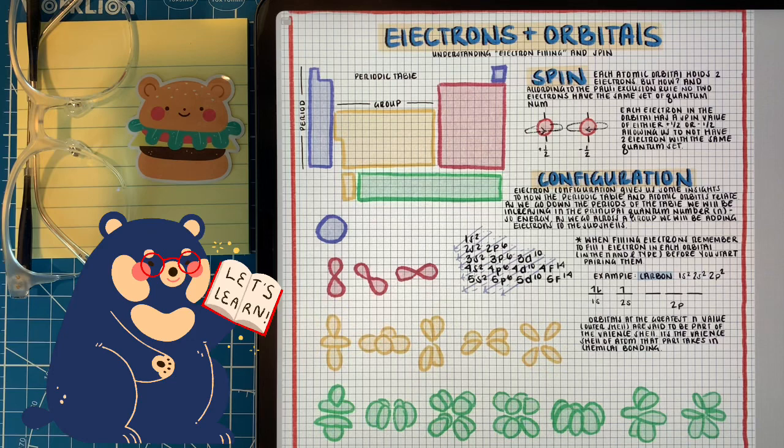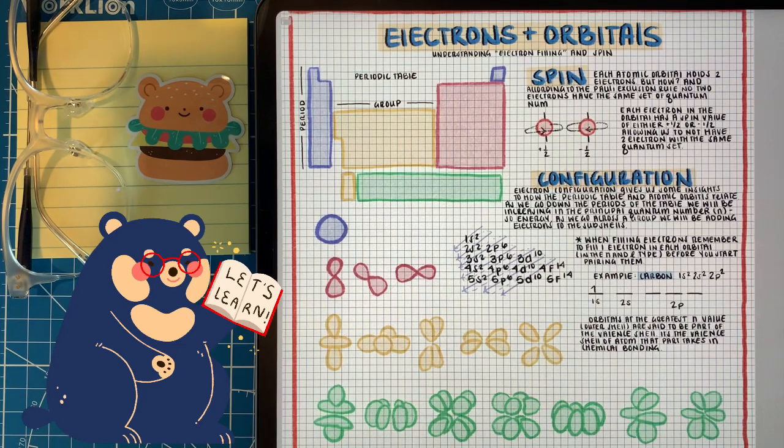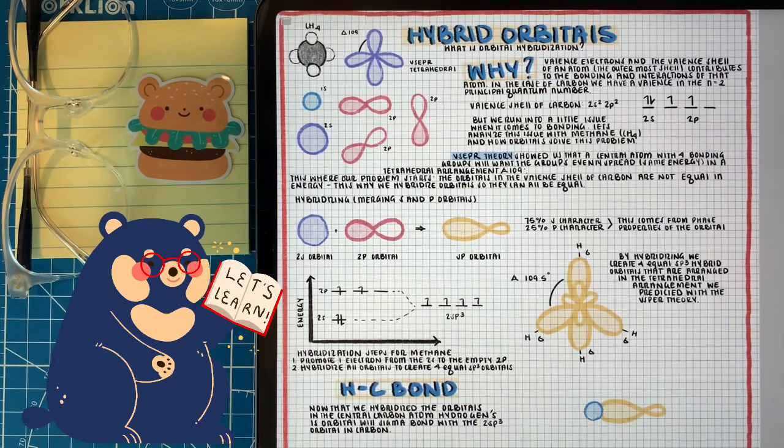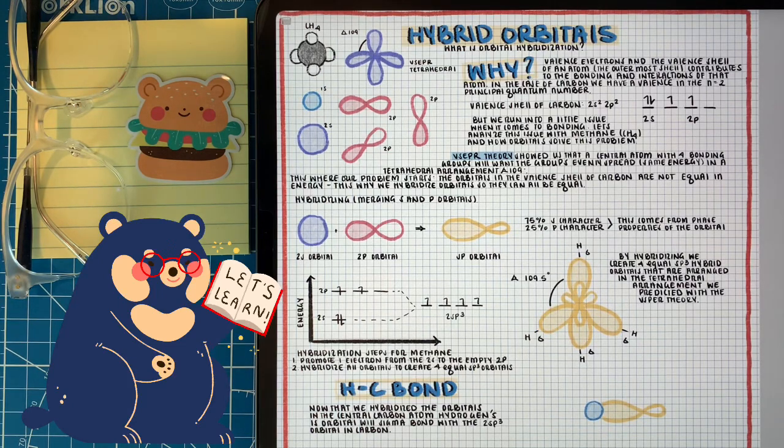Even though the VSEPR model is really helpful to help us understand how central atoms are going to rearrange bonding groups to lower the repulsive forces, atomic orbitals don't naturally have those shapes. And this is where we get into the topic of talking about hybridization. Even though methane wants that tetrahedral shape for the four hydrogens it's bonding with, each of those bonding orbitals have to be equal energy, equal length, and equal shape. So in order to do this, we talk about hybridization.